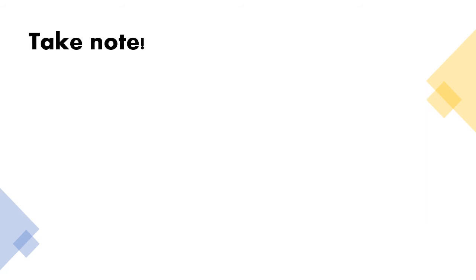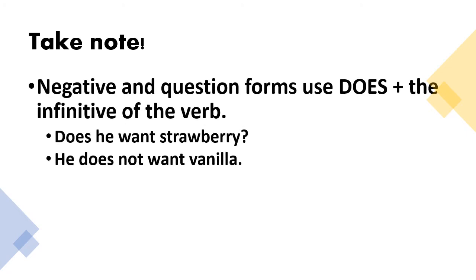In negative and question form, use does plus infinitive of the verb. Does is the third person of the auxiliary to do. For example, does he want strawberry? Now, that is in the question form. And for the negative form, the example is, he does not want vanilla.